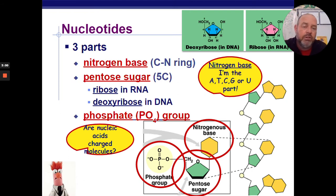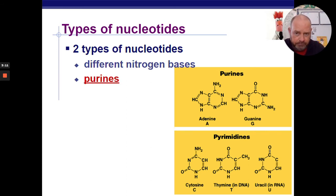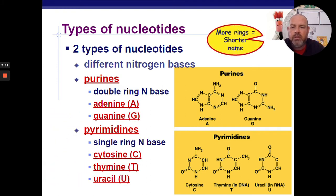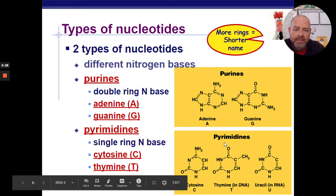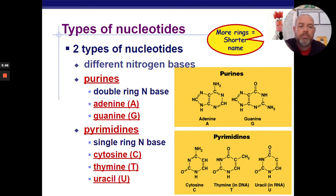DNA and RNA are both negatively charged because the phosphate group has a couple of negatives on it. For types of nucleotides, we have purines and pyrimidines — two different categories. The purines are the double-ringed structures: adenine and guanine. The pyrimidines are cytosine, thymine, and uracil. A memory device: 'you don't cut pyramids' — CUT goes together. Cytosine, uracil, and thymine are the single rings, which is the longer word, pyrimidines.